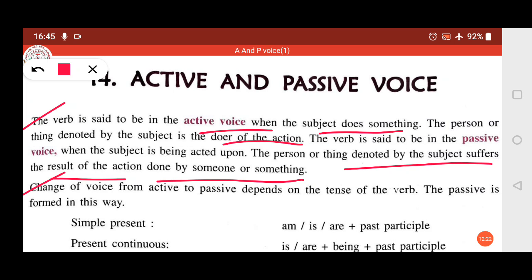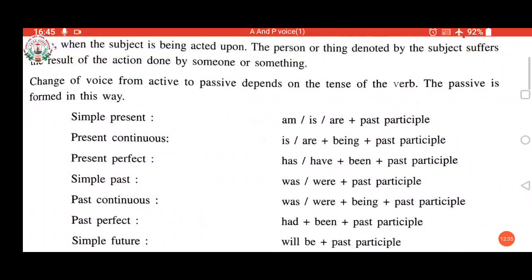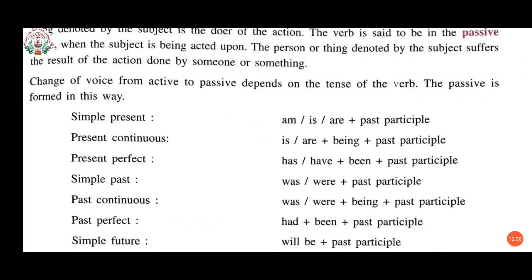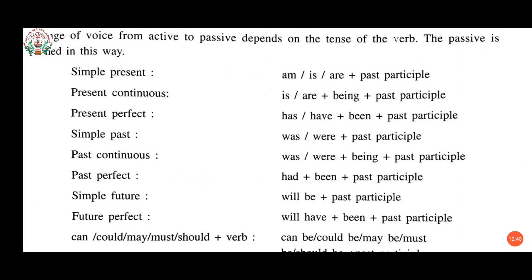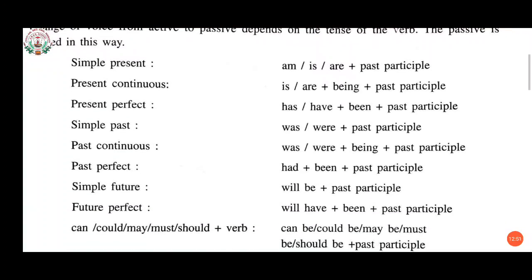We have gone through the verbs — present tense, past tense, and future tense. Here are some rules to follow while changing from active to passive voice. If active voice is given in simple present tense, the rules are: use 'am/is/are' with the past participle (V3).